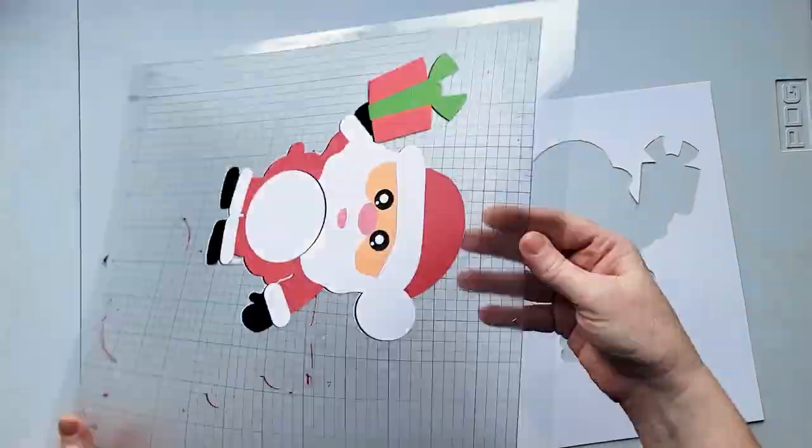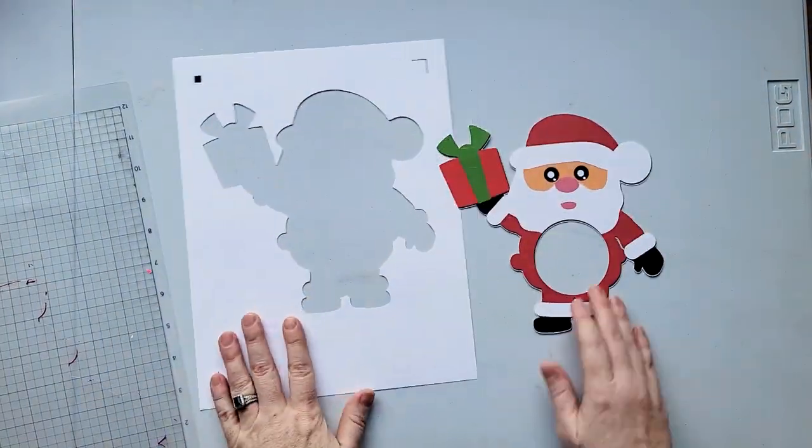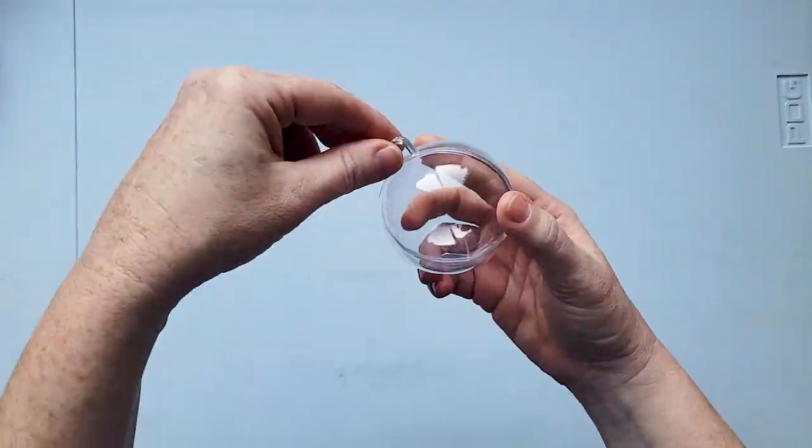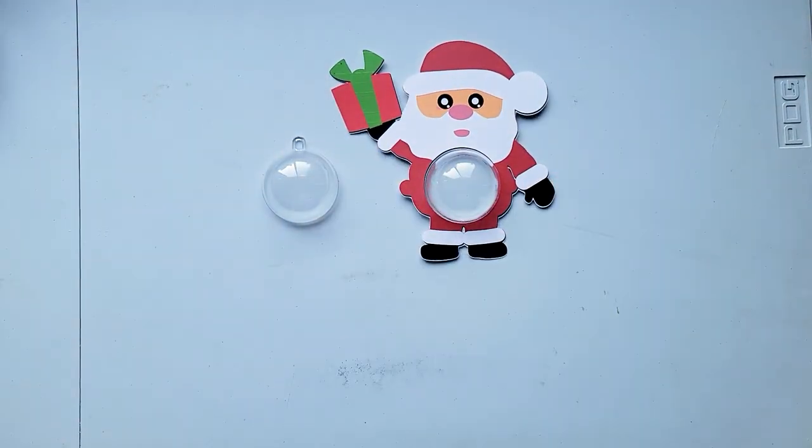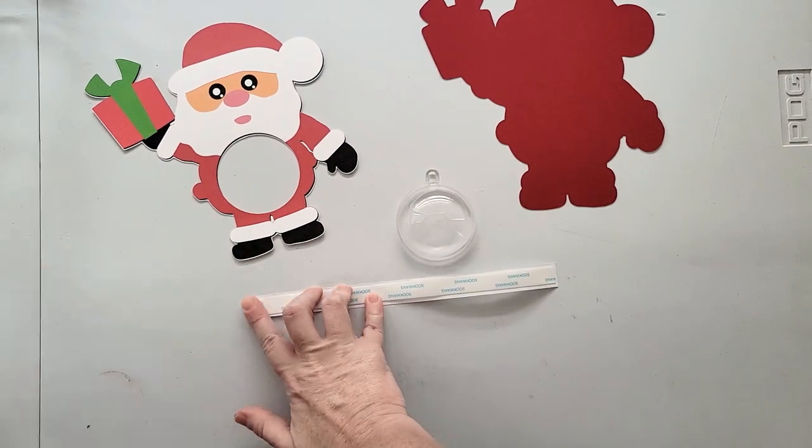The design that we're using is one that you can grab from the December design bundle at So Fancy. There's a link in the video description to check it out. After cutting out the printed design, you'll also want to cut out an offset out of colored cardstock that is just slightly larger than the design itself. Then you'll need either some plastic candy domes which usually come with a double-sided adhesive already attached to the back of them.